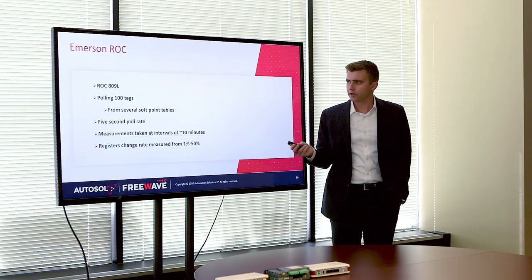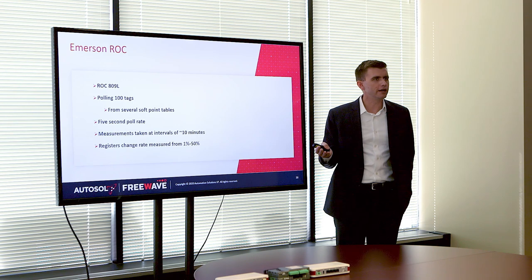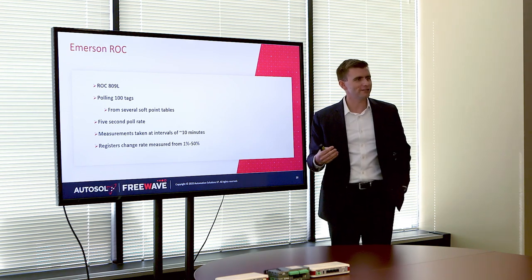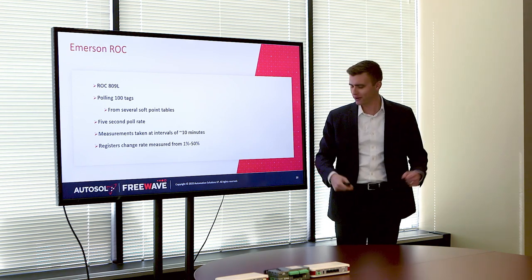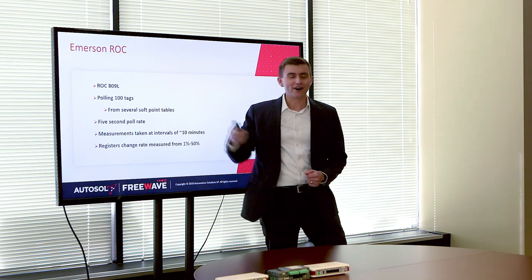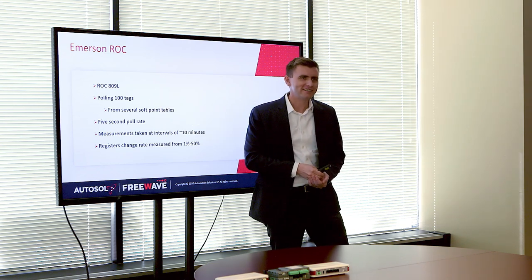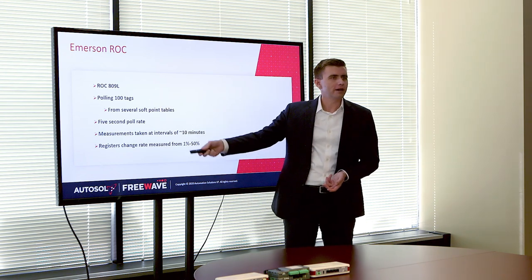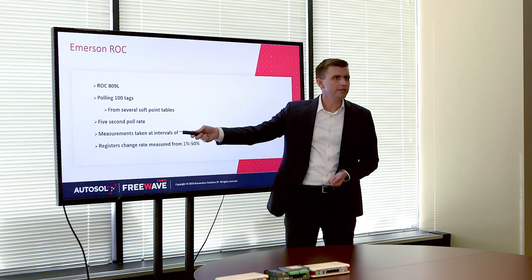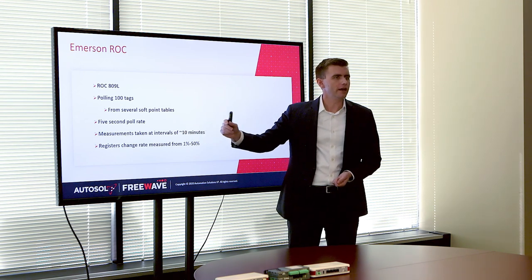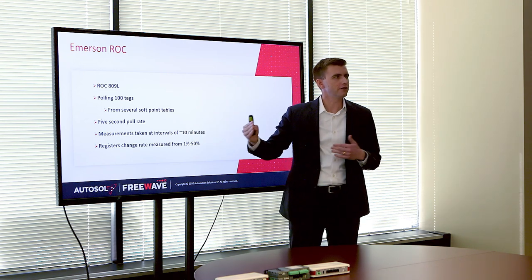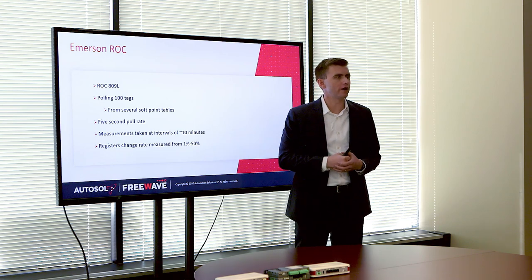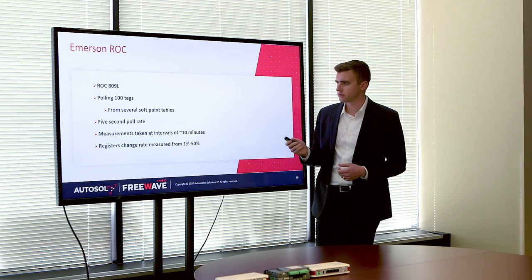On ROC, we had a very similar setup, but it's harder to get a ROC emulator going and we can only set up so many points on a ROC. So we did 100 tags. It's the same kind of thing: a 5-second poll rate with a 10 to 30 minute interval, and then 1 to 50% rate of change for the value of those tags.